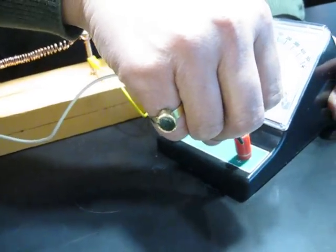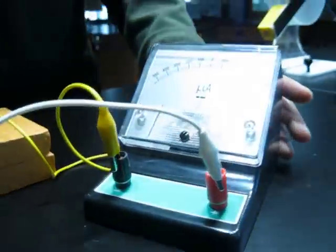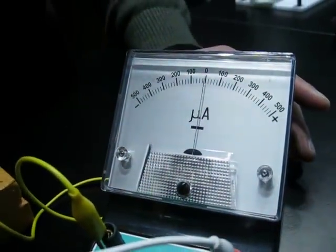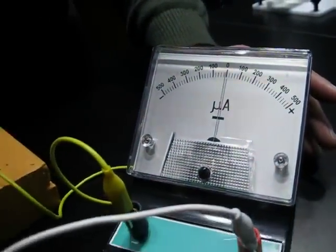The reason we're using a microamperimeter is because the current is so weak that no other ammeter or regular ammeter will be able to detect it.